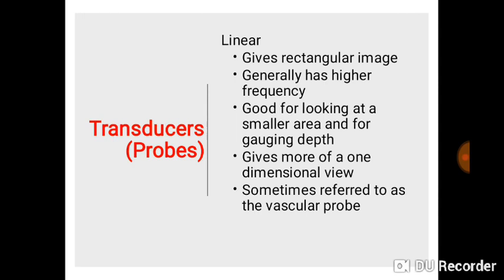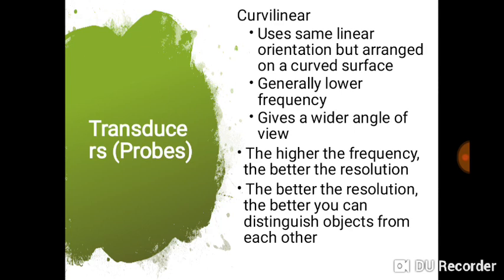Let's briefly look at a few types of transducers and probes. There is the linear probe, which we also recommend for breast ultrasound. The images it produces are rectangular. It generally has a higher frequency — ranging from 7.5 megahertz or higher — and is mostly used for superficial structures. It gives a one-dimensional view and is sometimes called the vascular probe, used to perform vascular studies since most blood vessels are relatively superficial.